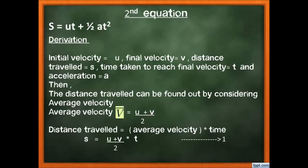The second equation of motion is: s = ut + ½at². This equation helps you find the distance traveled in time t. For derivation: distance = average velocity × time. Average velocity = (u + v)/2. From the first equation, v = u + at. Substituting: s = [(u + u + at)/2] × t = [(2u + at)/2] × t.